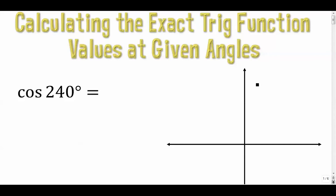In this video we're going to calculate the exact trig function values at given angles. I'm going to give you an angle not necessarily in quadrant one and ask for the exact value. For this set of examples we're not going to use calculators — every answer is going to be an exact value, like radical three over two or radical two over two.